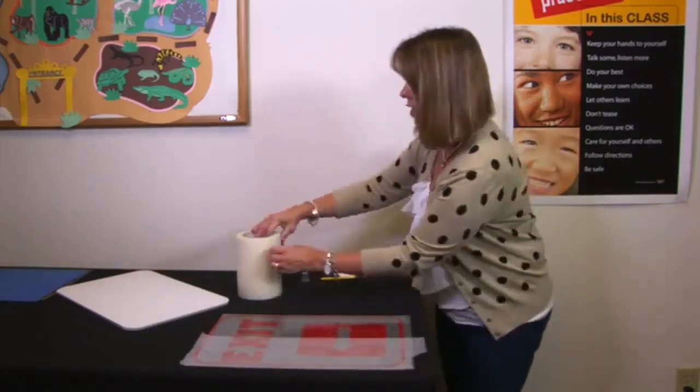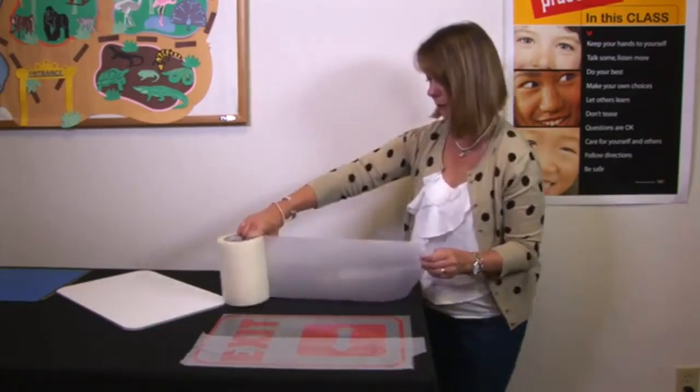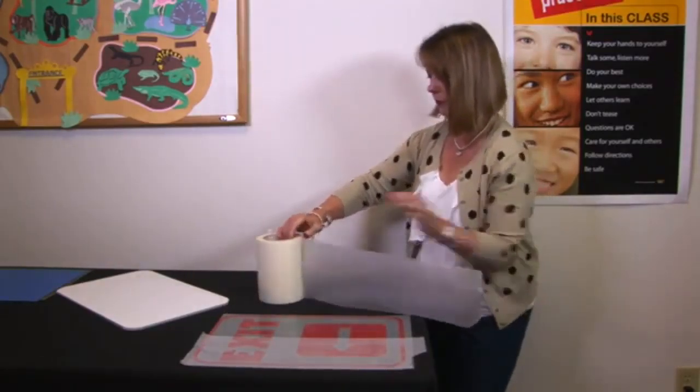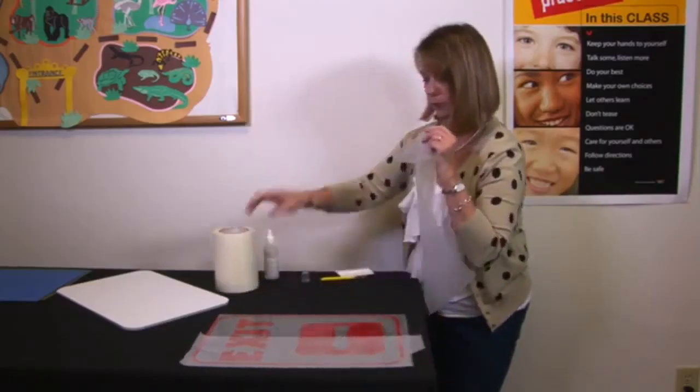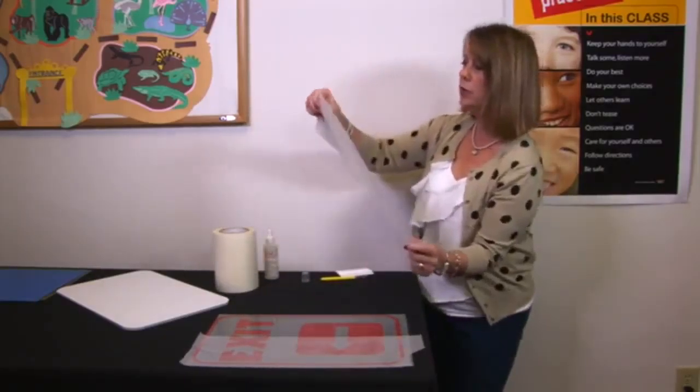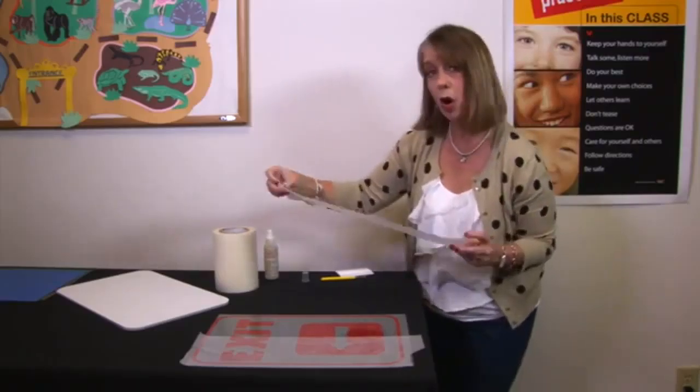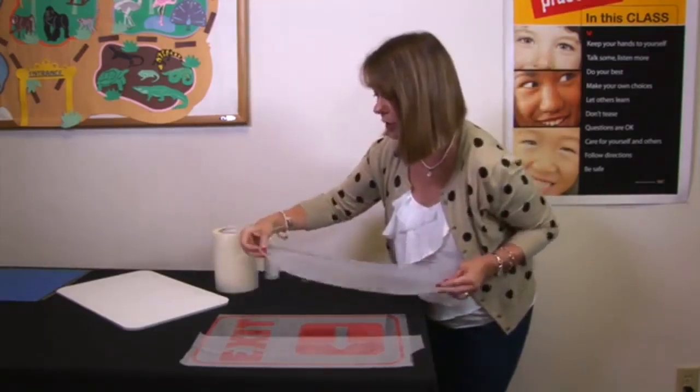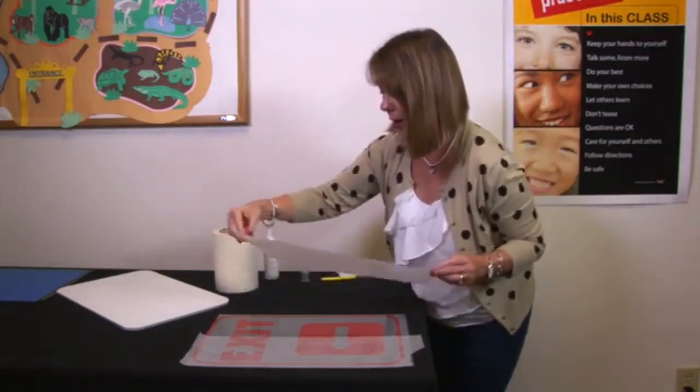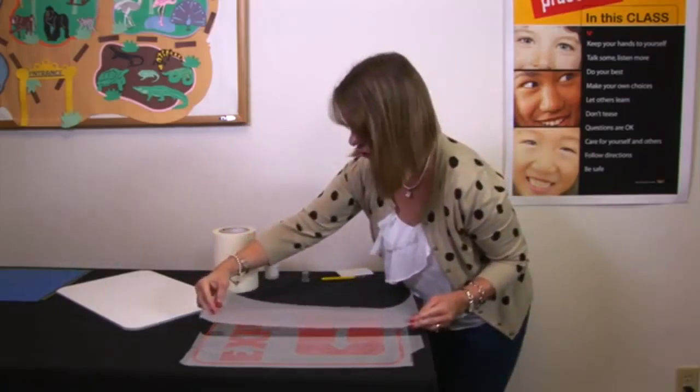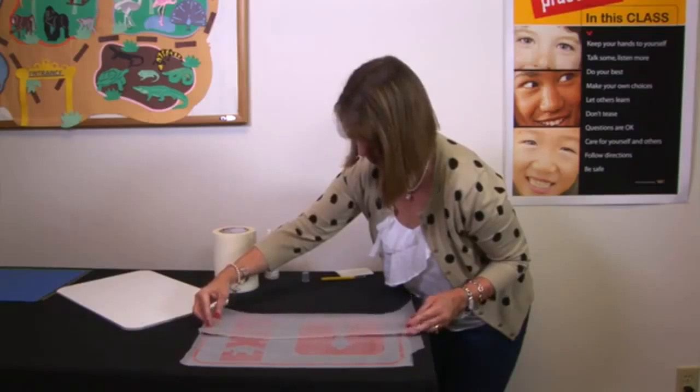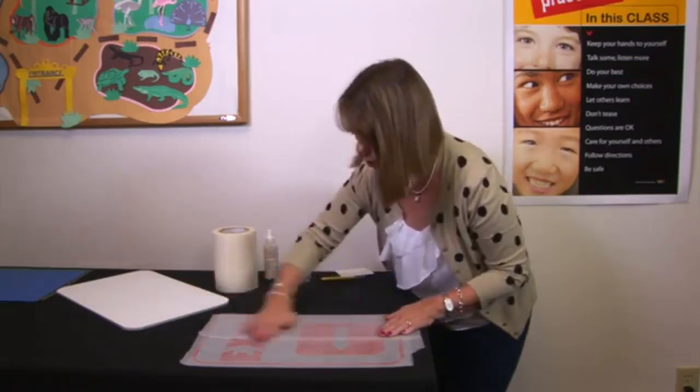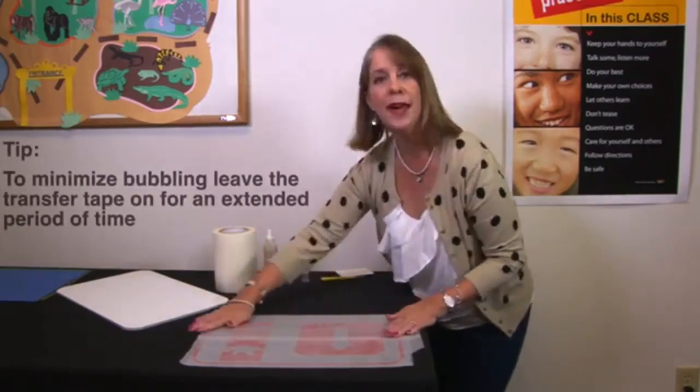Take your second sheet, rip it off the spool, and then lay it on the other side of your vinyl. You are going to overlap the two sheets of transfer tape by about a half an inch. Lay it down and then again smooth it with your hand.